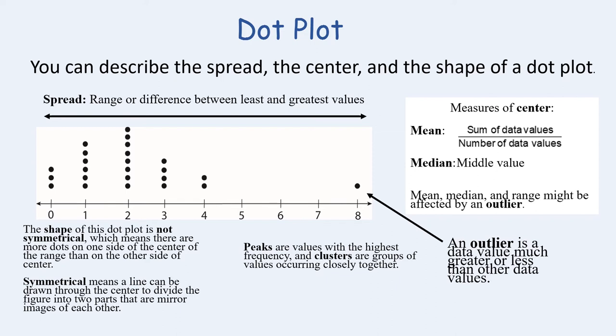Peaks are values with the highest frequency, so in this case we would say that two is a peak, and clusters are groups of values occurring closely together.